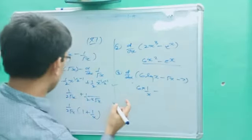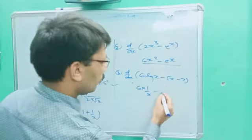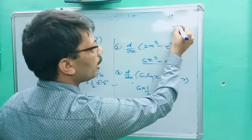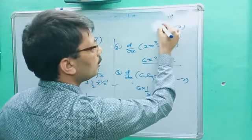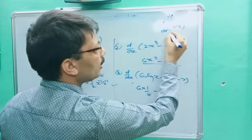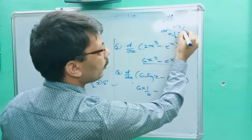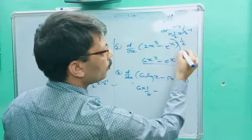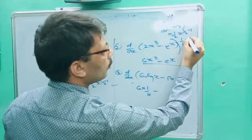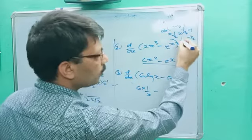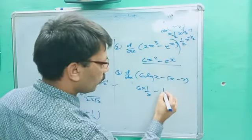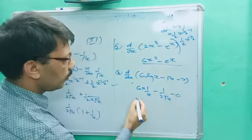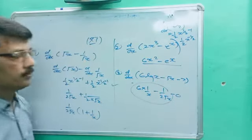Root x means x power 1/2, so d/dx gives 1/2 x power (1/2 - 1), which equals 1 upon 2 root x. Differentiation of the constant 7 is 0. So the final answer is 6/x minus 1 upon 2 root x.